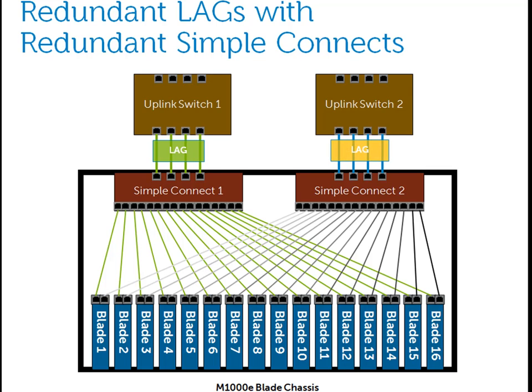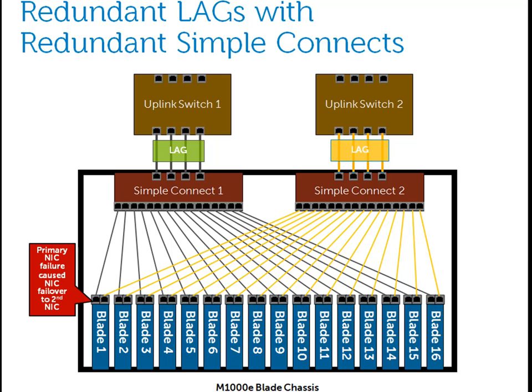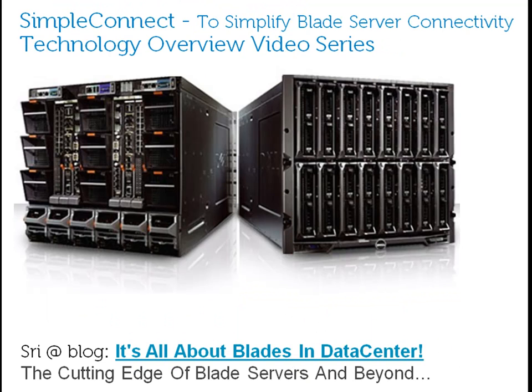For network redundancy, you can configure the same setup on the redundant Simple Connect module in the blade chassis as shown. This setup will work great with server NIC teaming and failover features, so if the primary NIC fails, the secondary picks up the traffic as depicted. Thank you for going through the first video.